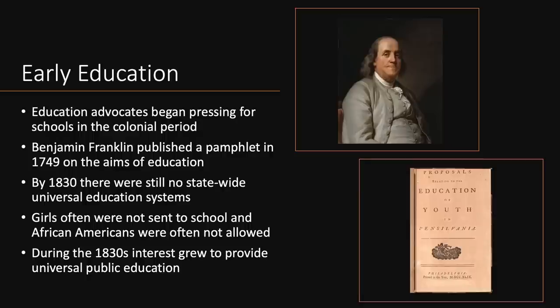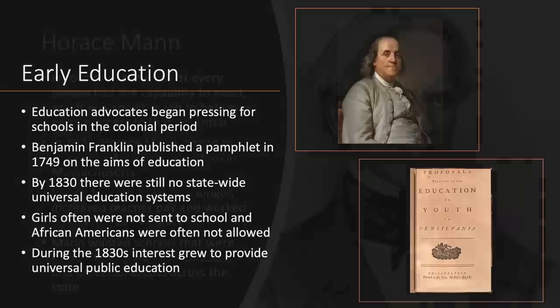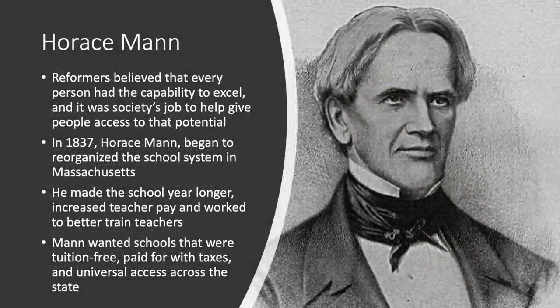However, by the 1830s there were still no state education systems — only local community-operated schools here and there. Often girls were not sent to school or attended for a shorter time, and in most cases African Americans were not allowed in schools at all. In the 1830s, interest grew to provide universal public education, and reformers believed every person had the capability to excel and it was society's job to help people access that potential. One of the main figures of this movement was Horace Mann.